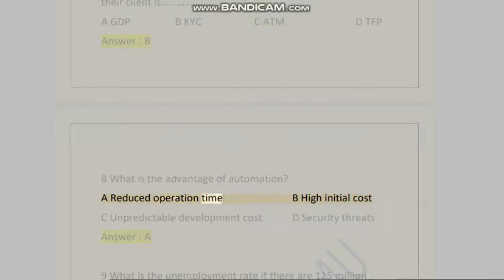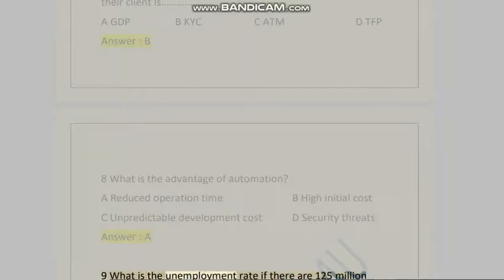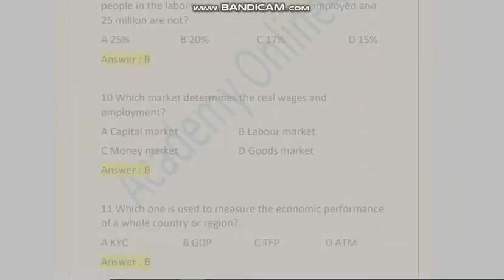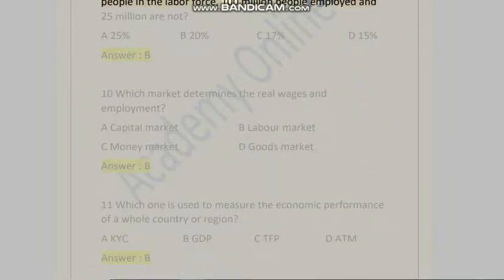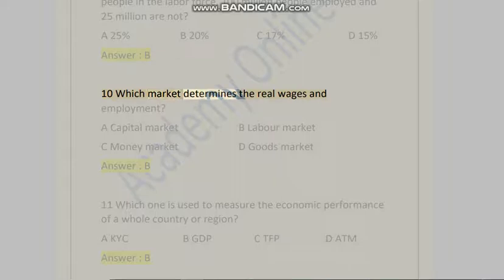...B) High initial cost, C) Unpredictable development cost, D) Security threats. Answer is A. Question 9: What is the unemployment rate if there are 125 million people in the labor force, 100 million people employed, and 25 million are not? A) 25%, B) 20%, C) 17%, D) 15%. Answer is B.